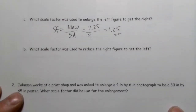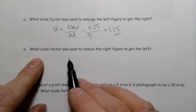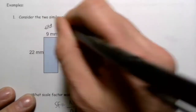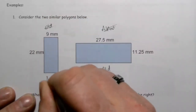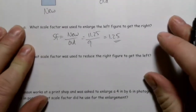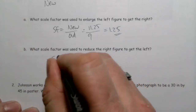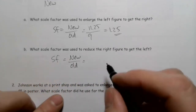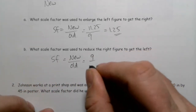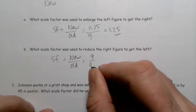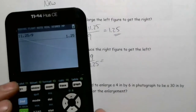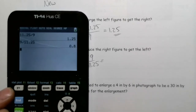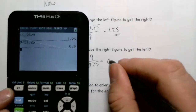Now, what scale factor was used to reduce the right image to the left? Now the right is old and the left is new. Scale factor equals new over old: new is 9 and old is 11.25, so 9 divided by 11.25 gives a scale factor of 0.8.